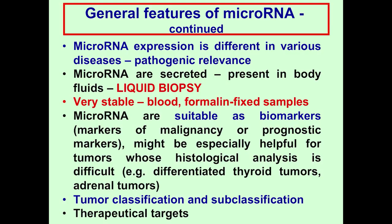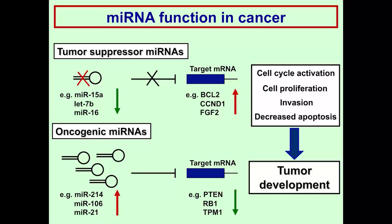From a histological point of view, microRNAs might be especially helpful for tumors whose histological analysis is difficult, such as differentiated thyroid tumors and also adrenal tumors. They might be used in tumor classification and subclassification and might also be therapeutical targets. Following the classical tumor suppressor–oncogenic dichotomy, microRNAs can also be classified in this fashion: underexpressed microRNAs can be tumor suppressors, and overexpressed ones oncogenic.